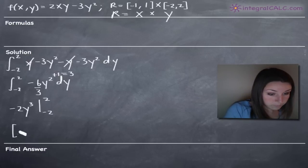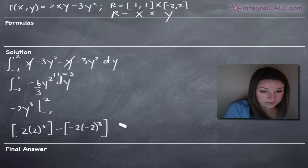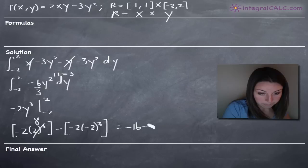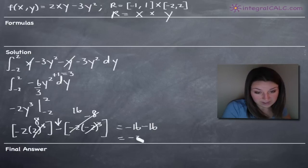Plugging this in, we'll get negative 2 times 2 cubed minus what we get when we plug in negative 2. So negative 2 times negative 2 cubed. If we simplify this, 2 cubed is 8, so negative 2 times 8 will be negative 16 minus negative 16. Negative 16 minus 16 is negative 32.